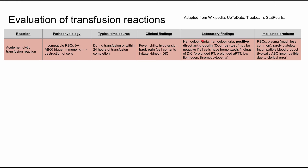Lab findings include hemoglobinemia, hemoglobinuria, a positive direct antiglobulin test — also called a positive Coombs test — and findings of DIC like prolonged PT, prolonged PTT, low fibrinogen, and thrombocytopenia. That Coombs test might actually be negative if all cells have already been hemolyzed, so you can't rely on it exclusively. All types of products can cause an acute hemolytic transfusion reaction, but it's most commonly seen with red blood cells, typically due to incompatible blood products, usually caused by a clerical error because of ABO antigen incompatibility.